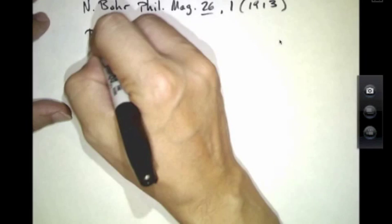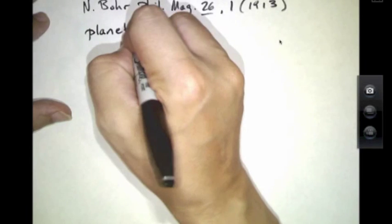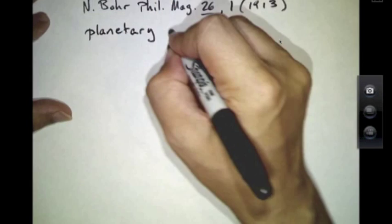Bohr's model was published in 1913, and in some sense it represents the atom as a small planetary system.